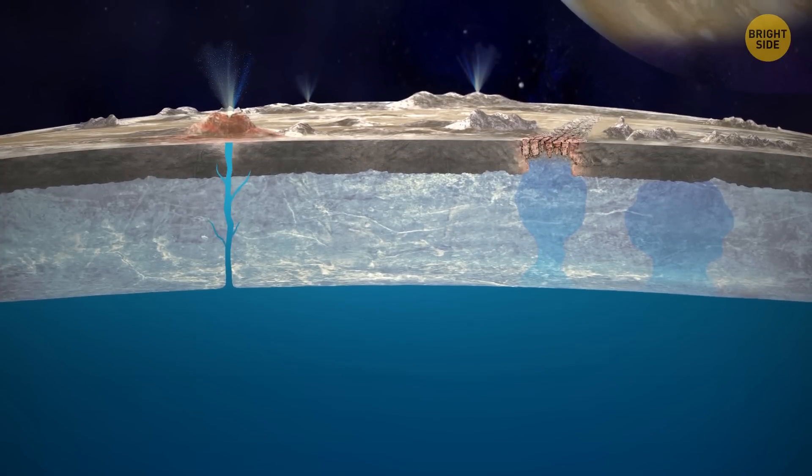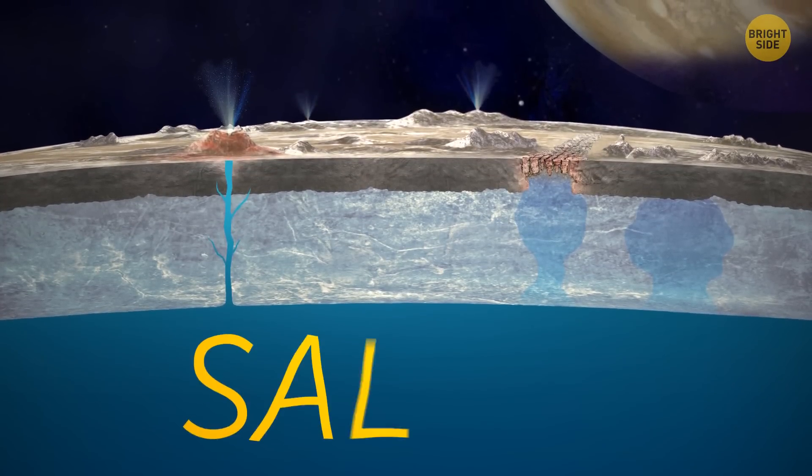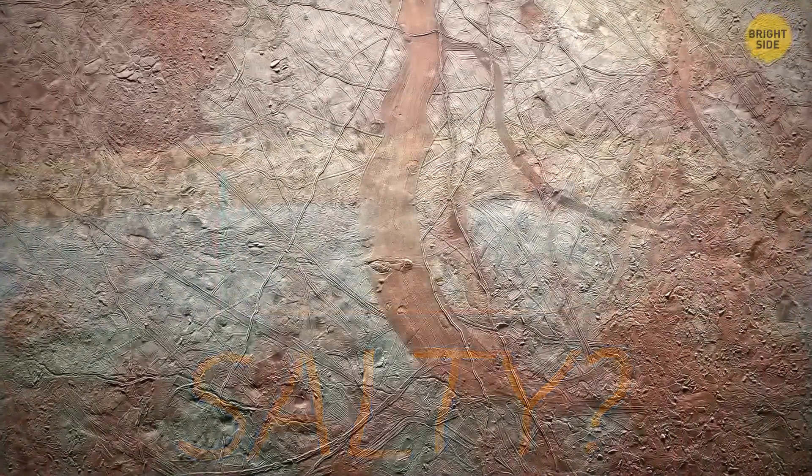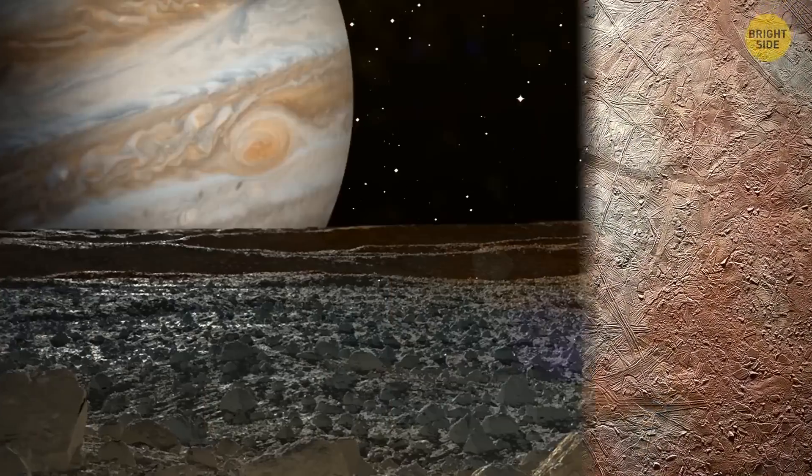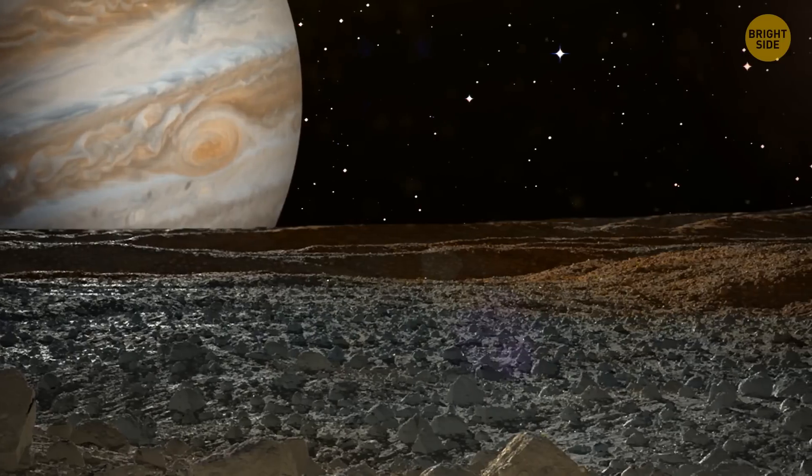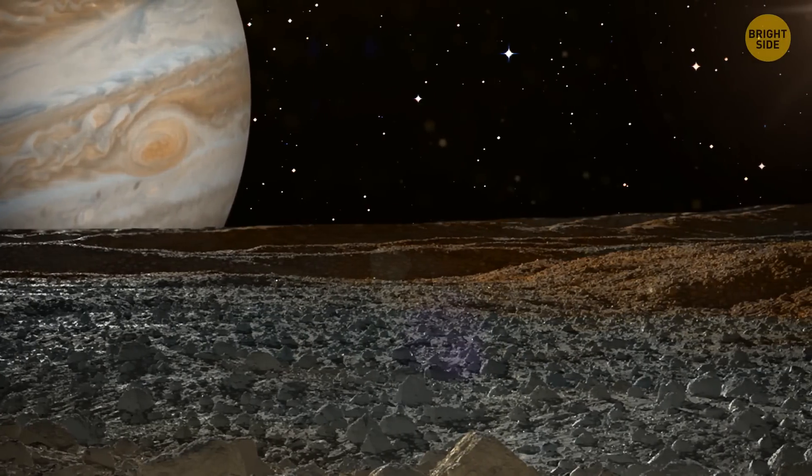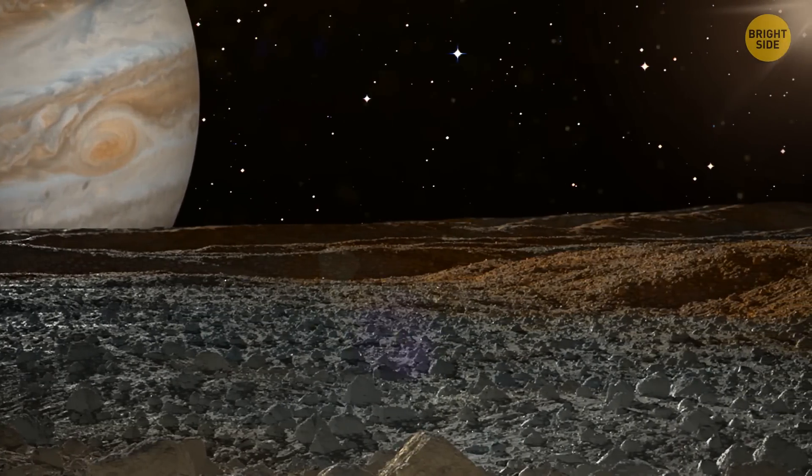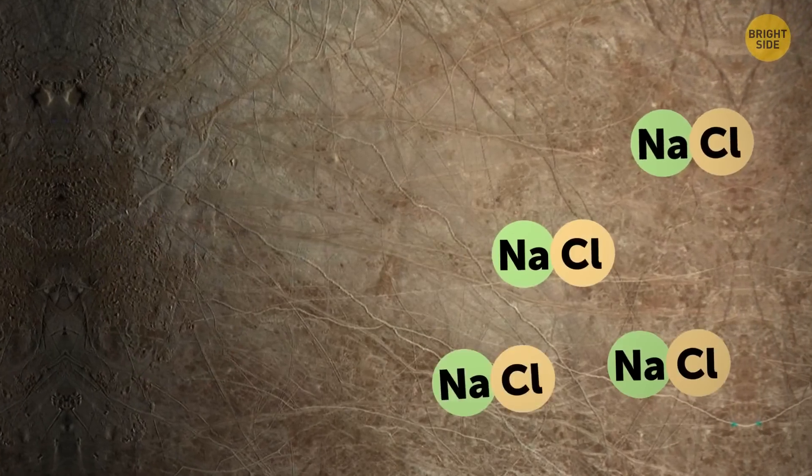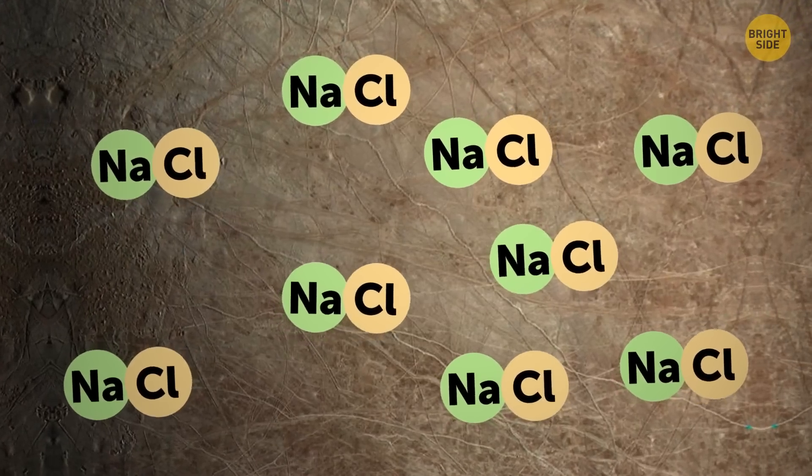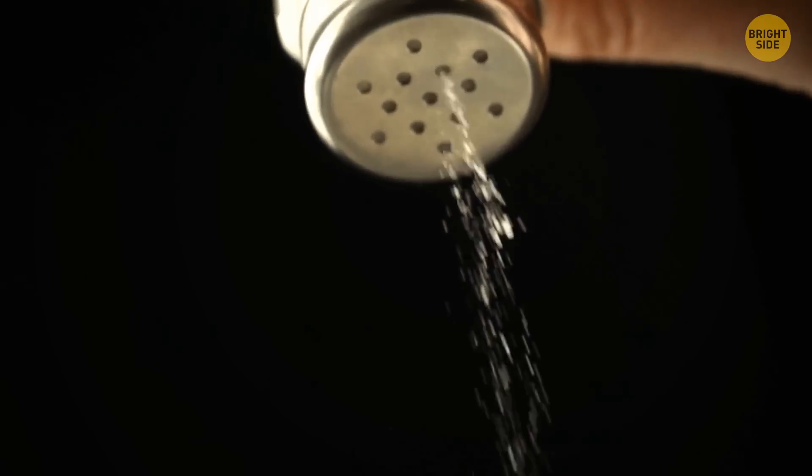Now, can we get back to the fact that the ocean on Europa seems to be salty? Red streaks on the satellite's surface might have this color due to their chemical content. They're likely a frozen mixture of water and salts. This is quite unusual because such a composition doesn't match any known substance here on Earth. As for yellow spots on Europa's surface, those might be caused by the presence of sodium chloride. You know this substance as good old table salt.